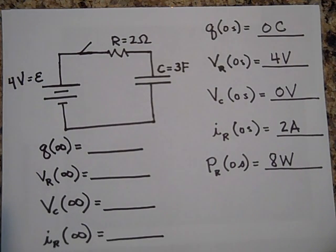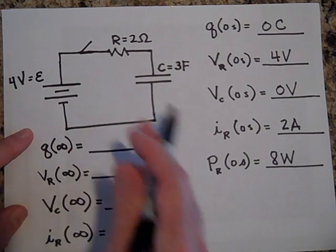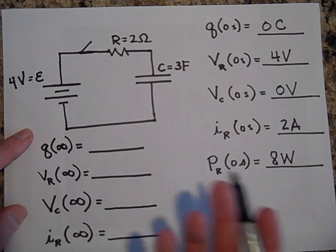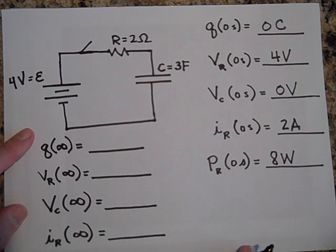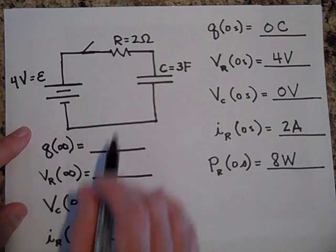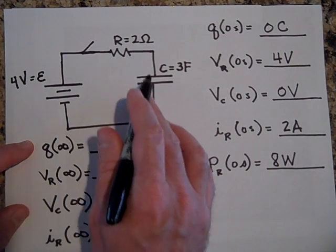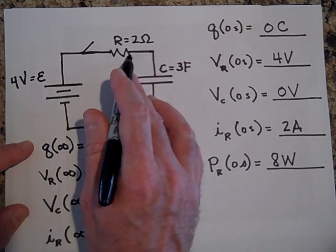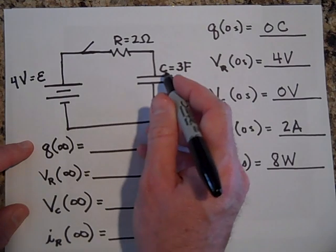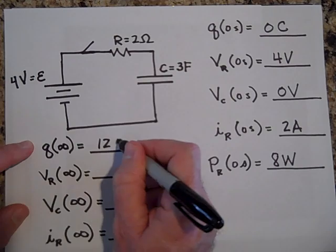Way, way later on, we'll say an infinite time later on, but you know, infinity in these circuits is maybe like five or six time constants. At that point, it's pretty much infinity to these circuits. So at infinity, what is the charge on the capacitor? At infinity, the capacitor is totally charged up. There'll be no voltage across here. So all that voltage has to be across there. So I'm thinking it's C times V. That's the charge C times V. And so that's going to be 12 coulombs.